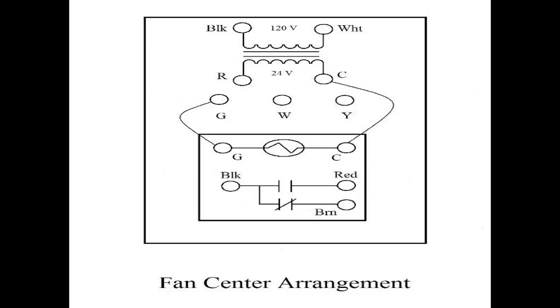The C is the common. It has one wire that's pre-wired to the common of the fan relay coil. You also have a G terminal that's pre-wired to the G or the other side of the fan center relay. You have a W and a Y that's just junction point.